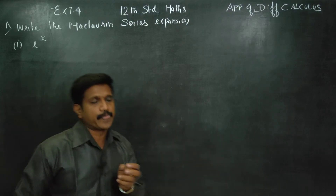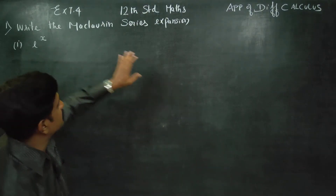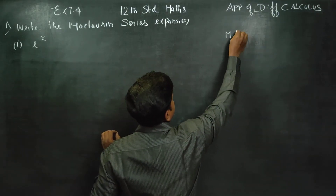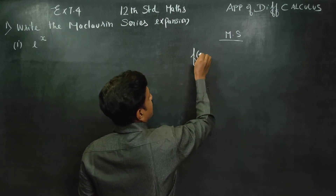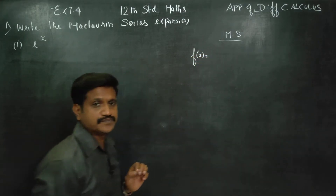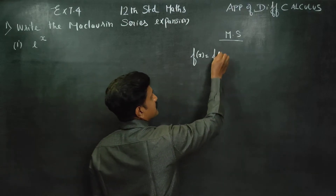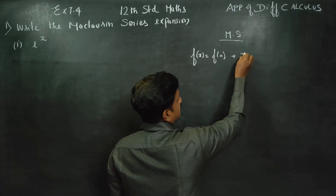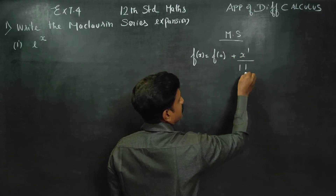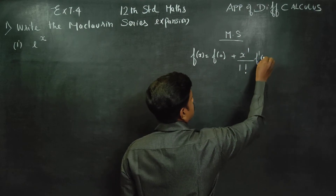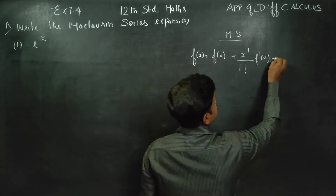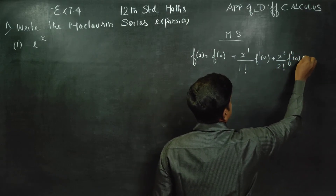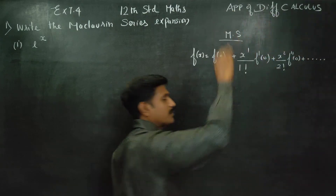You will know the expansion — how do you expand e power x? Maclaurin series is a formula and rule: f of x is equal to f of 0, plus x power 1 by 1 factorial into f dash 0, plus x squared by 2 factorial into f double dash 0, plus dot dot dot — it is infinite.